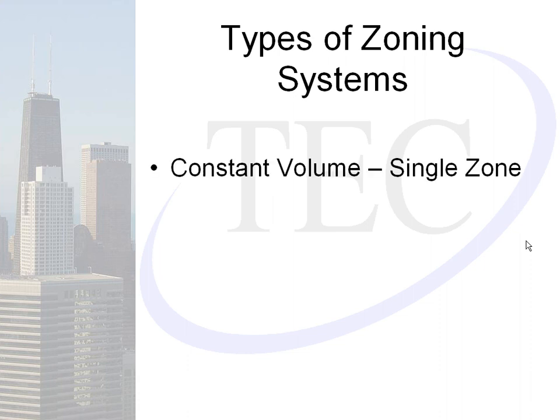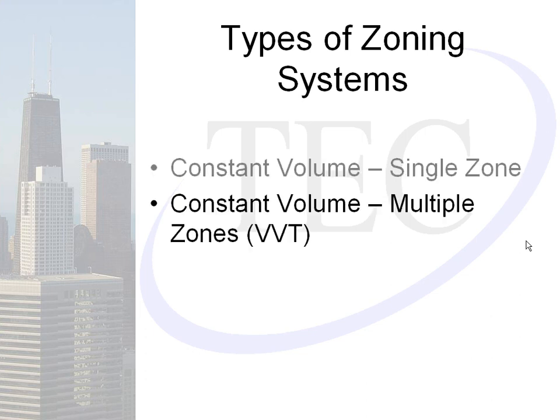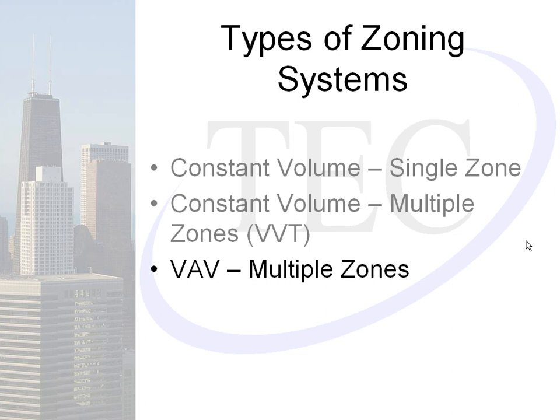There are three distinct types of zoning systems. The first type is constant volume single zone, most commonly seen as a rooftop unit. We then have constant volume multiple zones, which is better known as VVT. And we have VAV multiple zones. The primary difference between constant volume and VAV is that constant volume has the fan running at a single constant speed, while the VAV unit's fan speed or vortex dampers adjust according to static pressure in the duct, giving a variable volume of air.